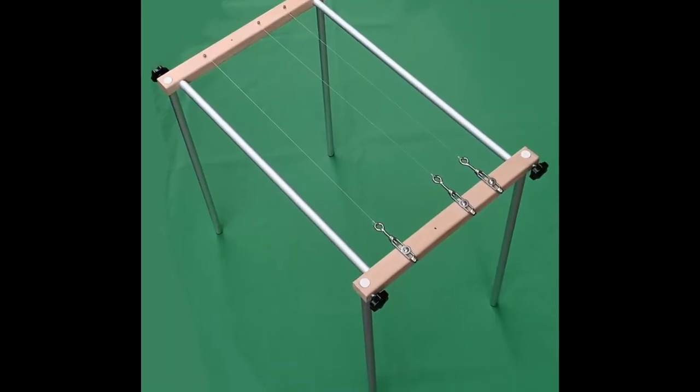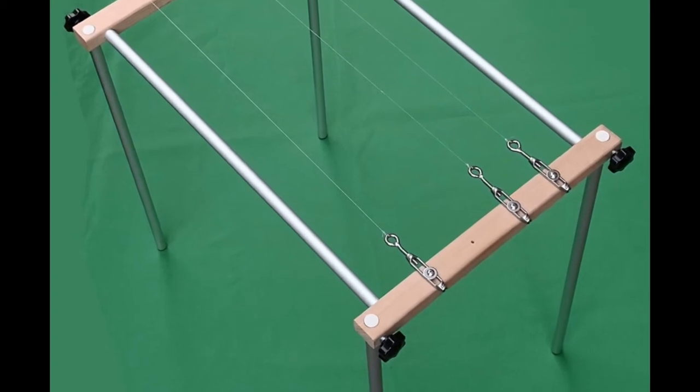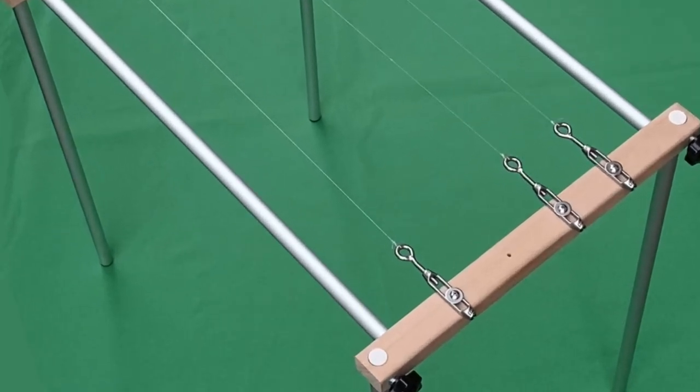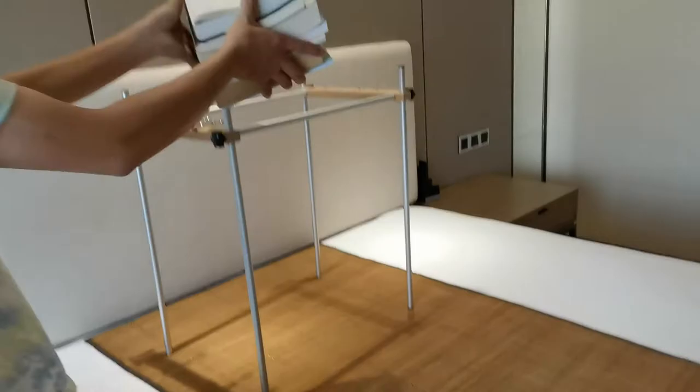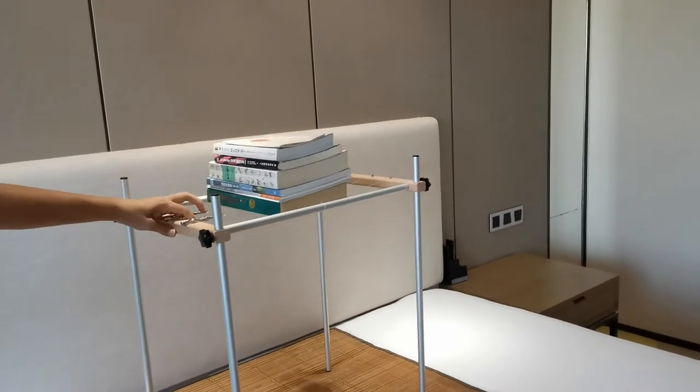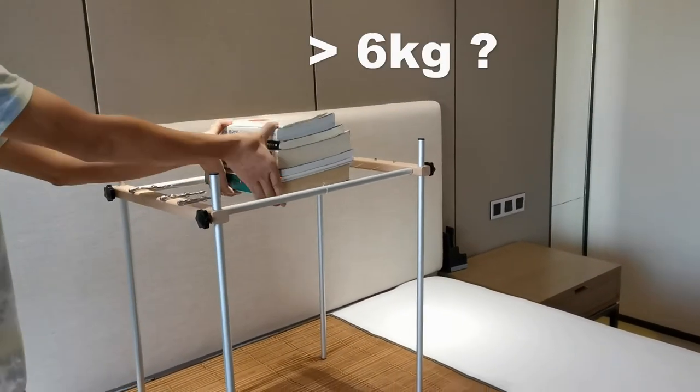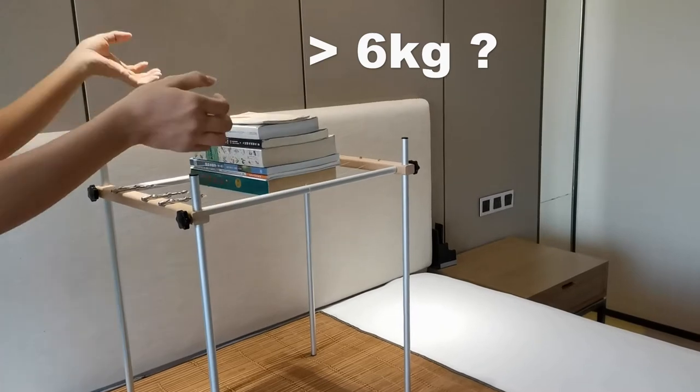The unique design contains three transparent fishing lines tensioned extremely by cable tensioners. The reading stand can support a very heavy and large book, even as heavy as 6 kg, no problem.